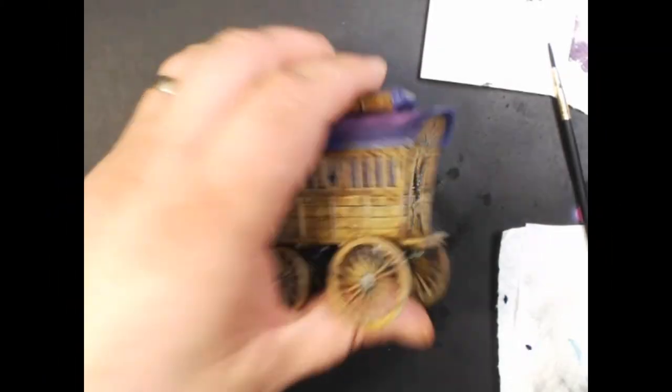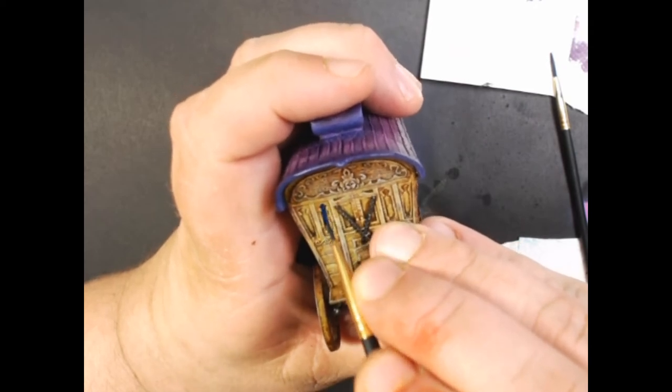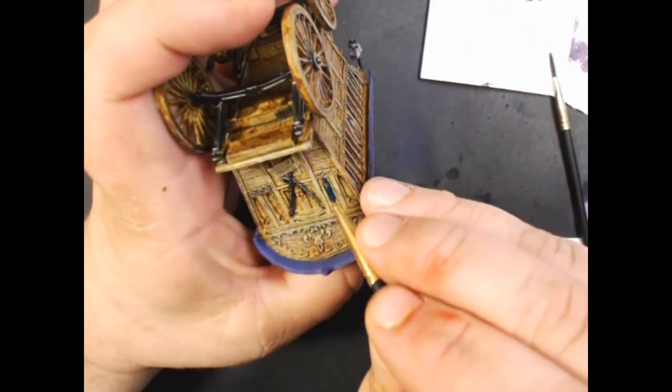Next up, we've got some Vallejo Model Color Dark Prussian Blue. And we're going to paint all of these little windows. There are 41 of them.